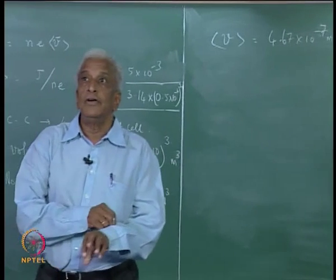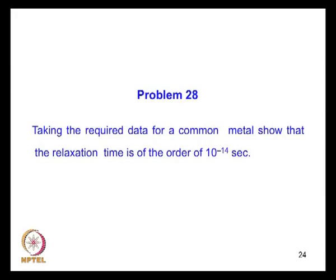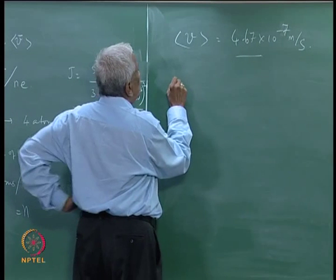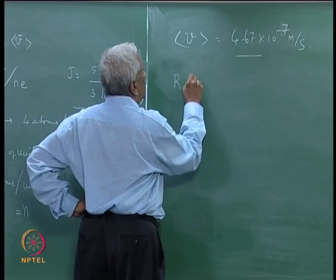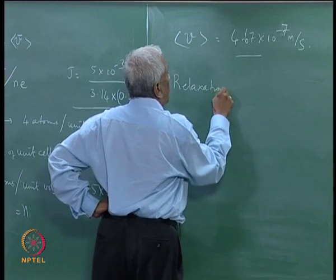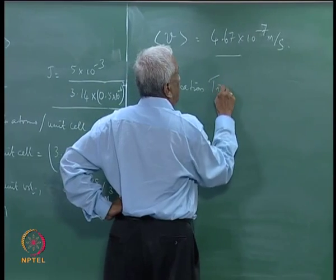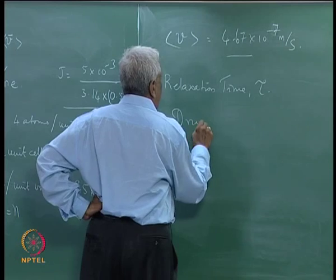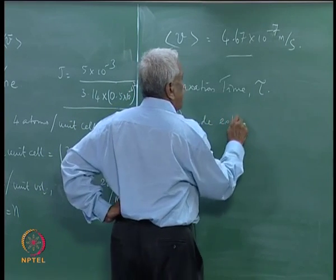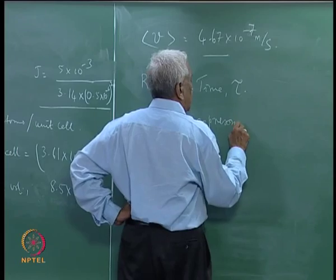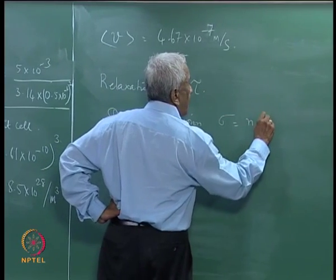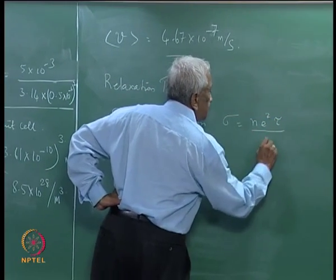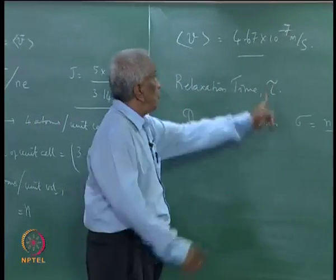Next, we will take the data for a common metal, a general metal. And we are asked to calculate the relaxation time tau from Drude expression for the electrical conductivity, where tau is the relaxation time.